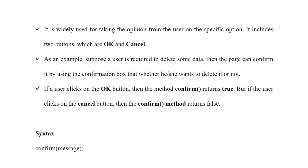The confirm dialog box is used to take an opinion from the user. For example, if a user is required to delete some data, the page can confirm it using the confirmation box — asking whether they want to delete it or not. When a user selects a file and clicks delete, a dialog box appears. If they click OK, the file is deleted; if they click Cancel, the task is cancelled. When OK is clicked, the confirm method returns true; when Cancel is clicked, it returns false. The syntax is: confirm("message");